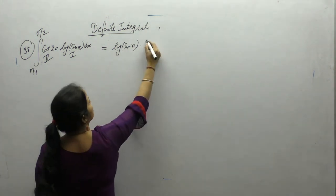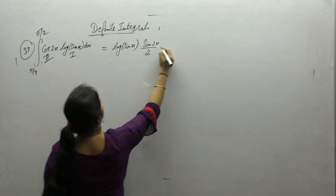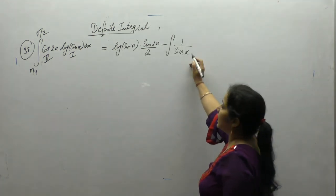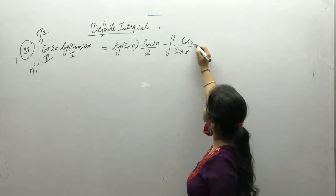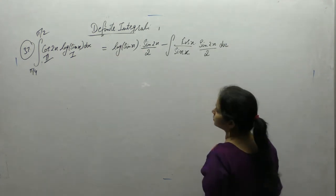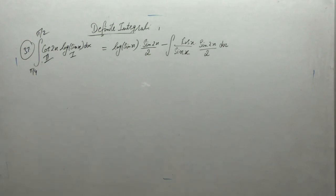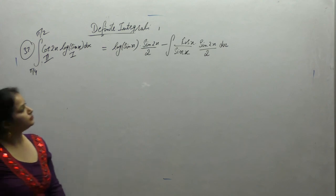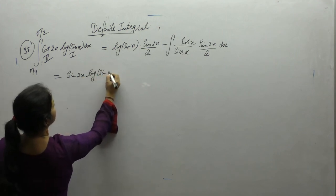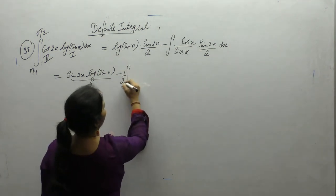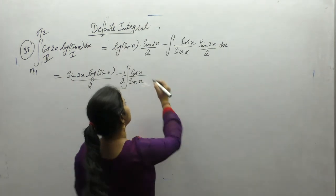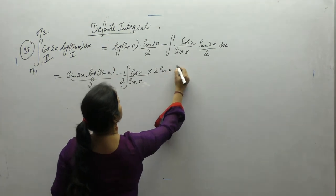Integral of cos is sine. Derivative of log x is 1 upon x. Here x is sine x, so derivative of sine is cos. Integral of cos is sine 2x upon 2. So we get sine 2x · log(sin x) upon 2 minus 1 by 2 · cos x upon sin x · sine 2x. Using the identity sine 2x equals 2 sin x cos x.